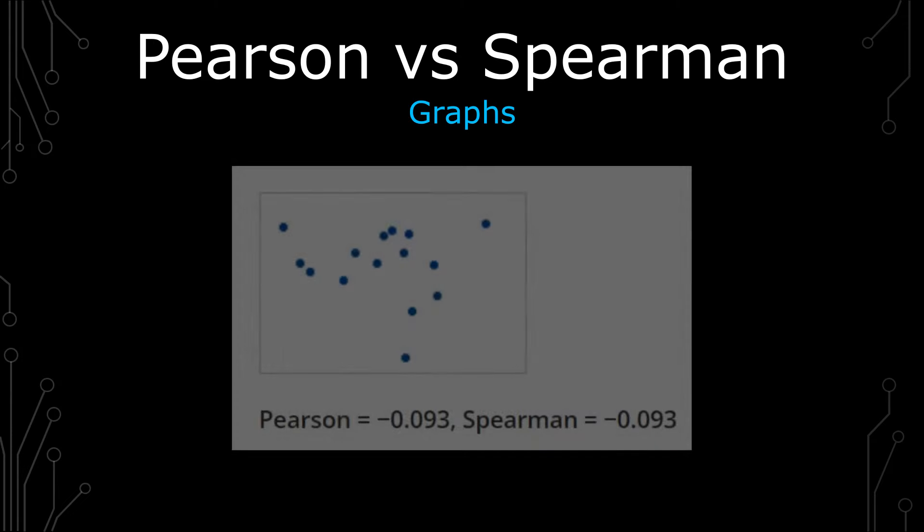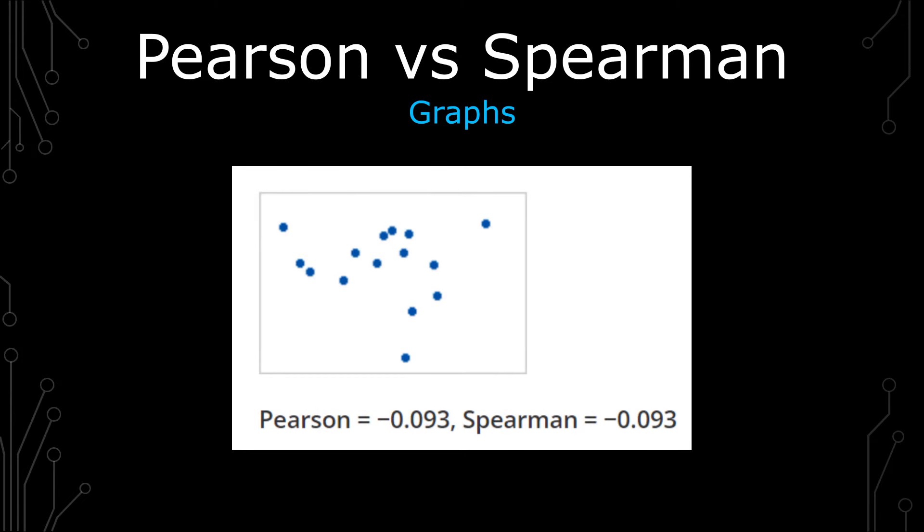The third graph here shows no distribution. For both Pearson and Spearman, there doesn't seem to be anything that shows a strong relationship, which is why both of them have a value of negative 0.093. Because there does seem to be somewhat of a downward trend, but there's no clear relationship that's present.